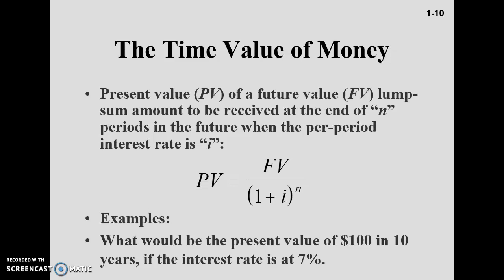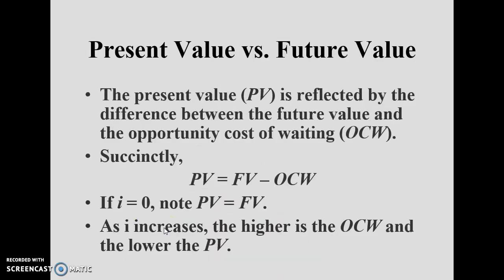For example: what is the present value of $100 in ten years if the interest rate equals 7%? You substitute n = 10 and i = 0.07 into the formula PV = FV / (1 + i)^n to calculate the present value. Conversely, if present value is given, you can find the future value by cross-multiplying (1 + i)^n with PV.